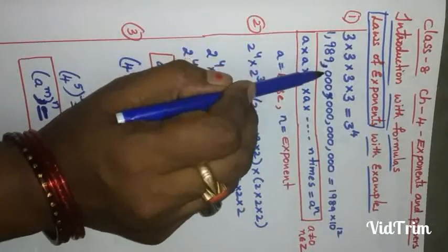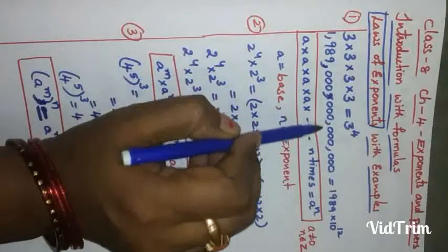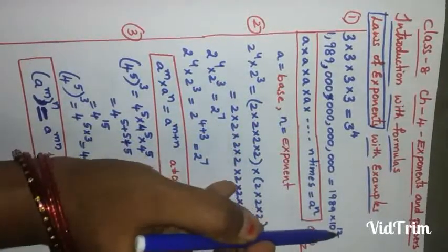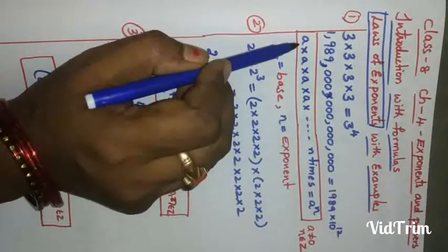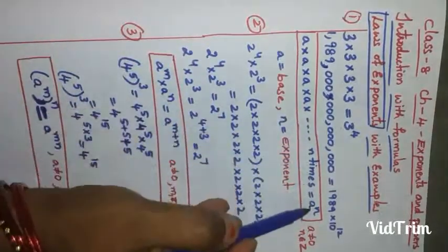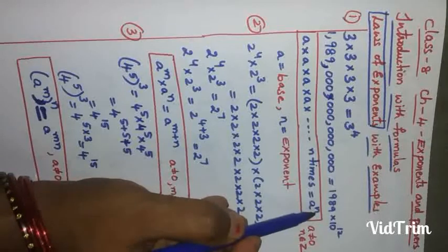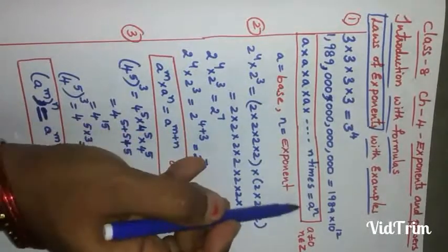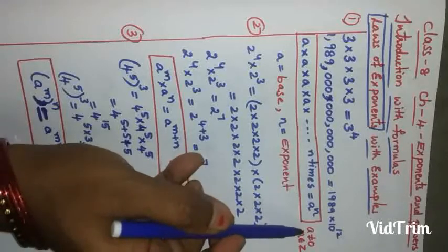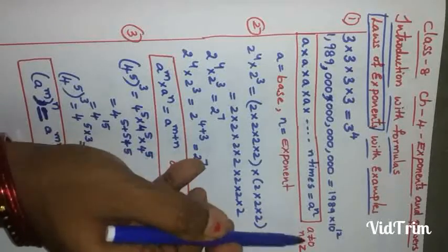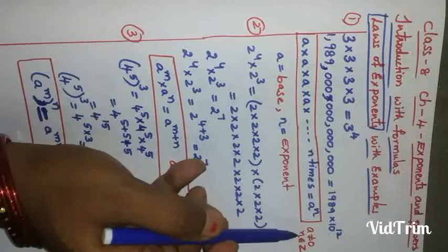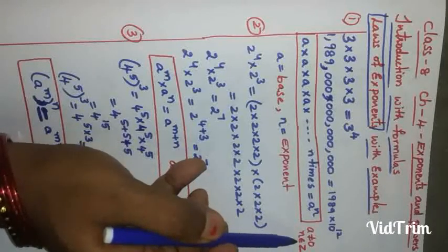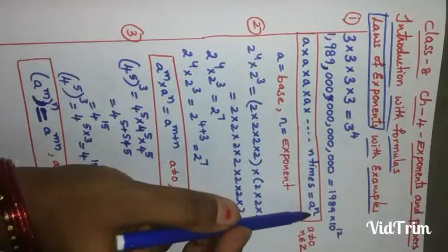For example, 1989 into 10 to the power of 12 — how many zeros are there? 12 zeros, so 10 to the power of 12 means 10 multiplied 12 times. Similarly, a multiplied n times gives a to the power of n. In the exponential form a^n, 'a' is the base and 'n' is the exponent. Here a is not equal to 0, and n belongs to integers — it may be positive, negative, or zero.